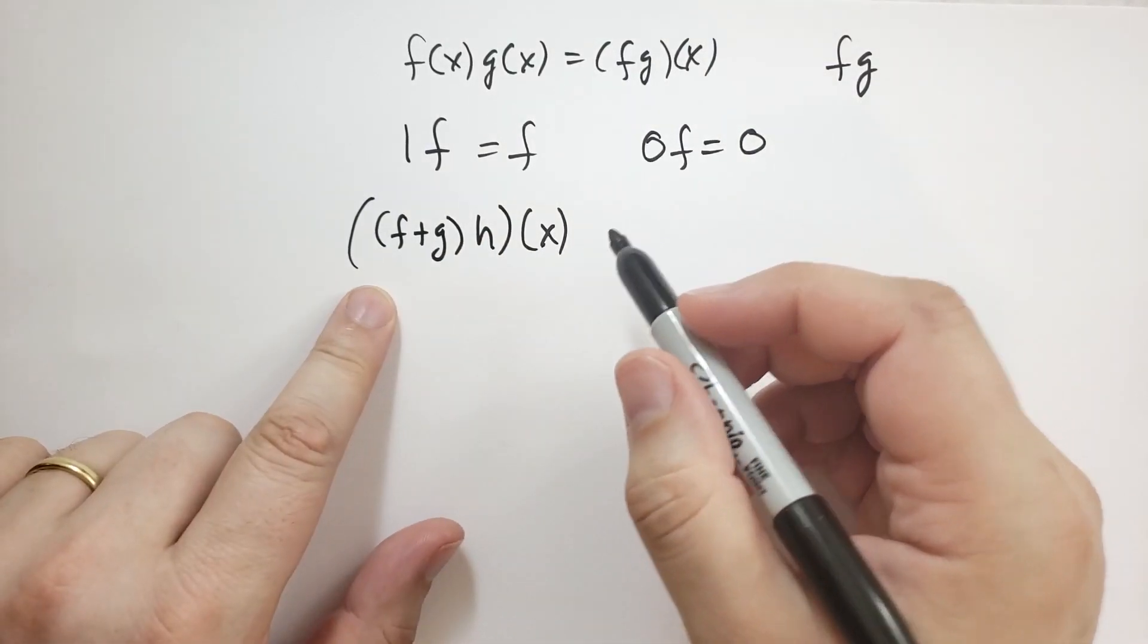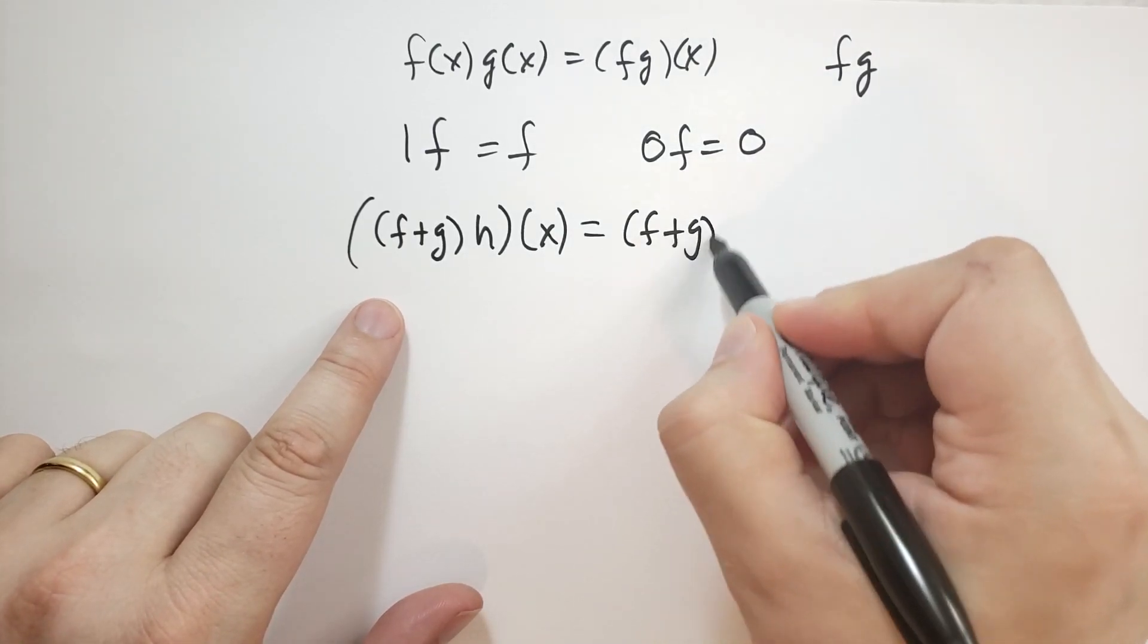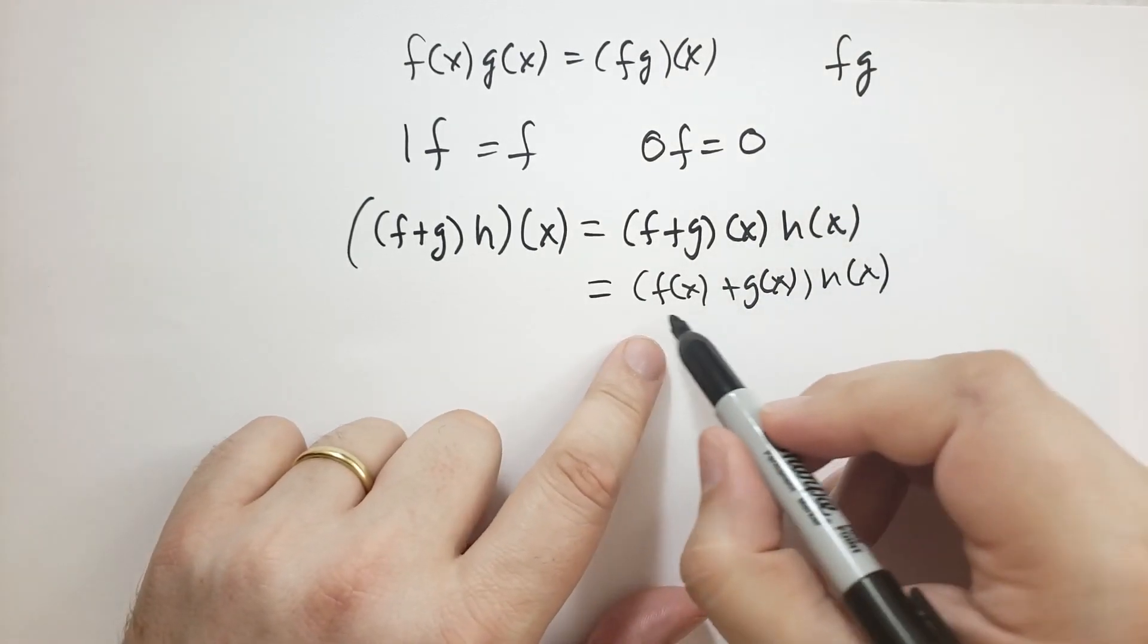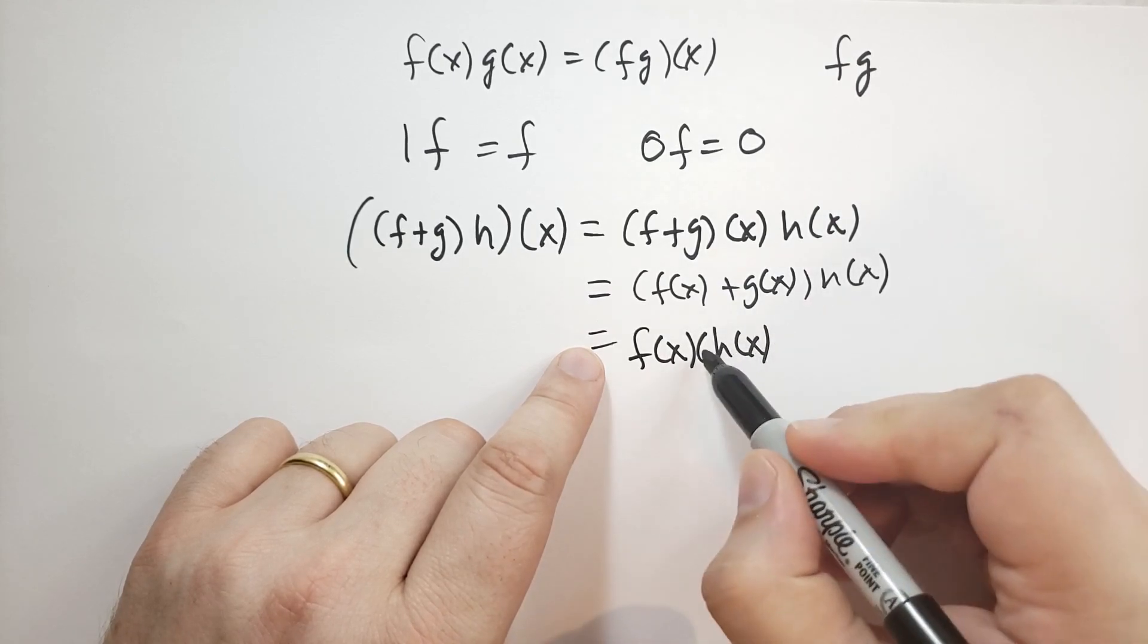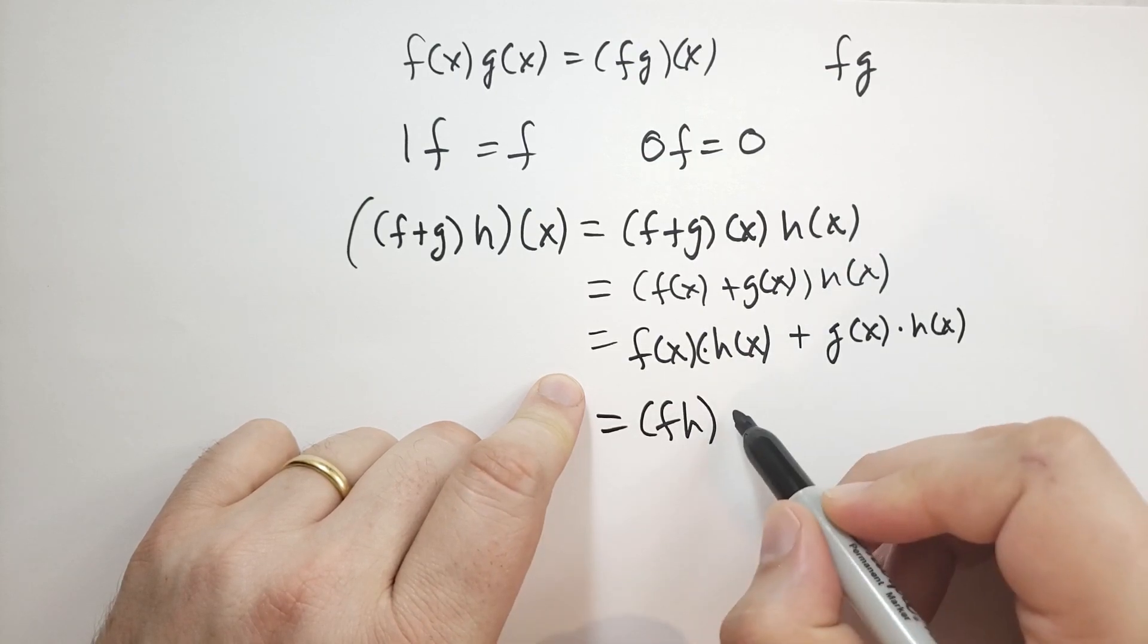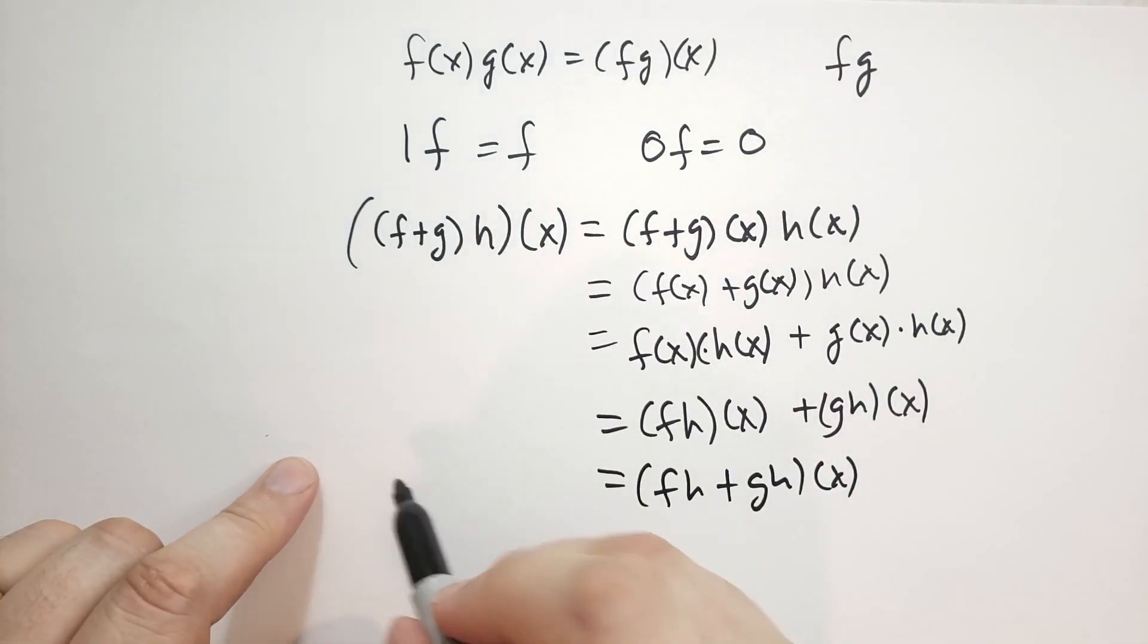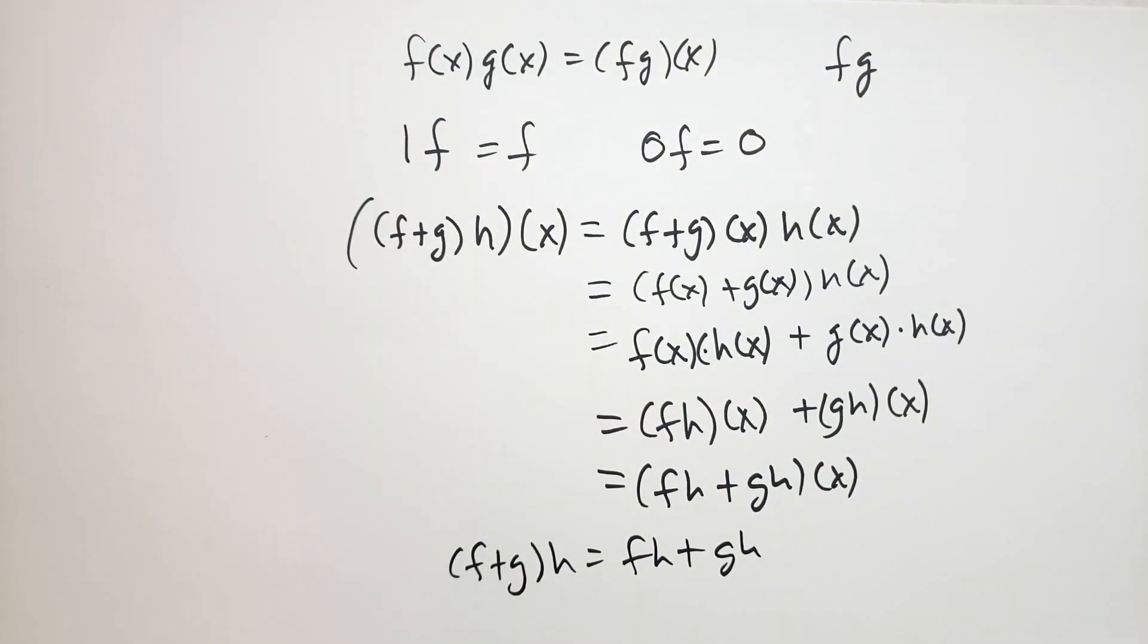We can distribute. So if we had f plus g times h, all applied to x. Remember, all these functions have to have the same set of possible input values. Well, we can rewrite this as f plus g of x times h of x. And so that will be f of x plus g of x times h of x. And now we're just using standard distributed power because these are, each of these are real numbers. So we have f of x times h of x, plus g of x times h of x. So this is the same as f h of x plus g h of x, using this definition up here. And then that is going to be the same as f h plus g h of x. Rather trivial to show that these two things are equal. So we can say, using functions, those two things are equivalent. They're the same.